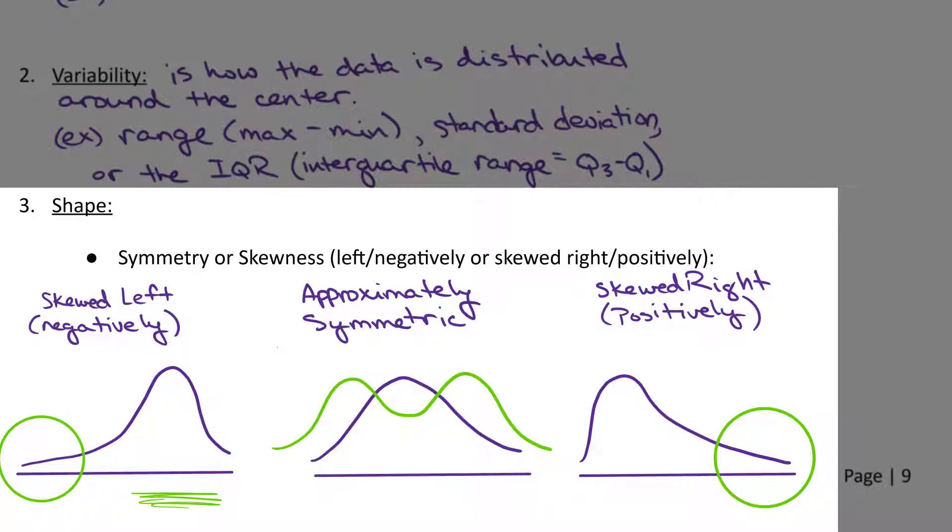Sometimes, we'll say negatively or positively skewed. If they're using that type of vocabulary, then just imagine this on a number line. Your positive numbers are going to the right, and your negative numbers would be going to the left.